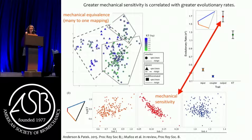That raises the question: if you have a mechanical system very sensitive to one component, should this be associated with a decrease in evolutionary rate of change? To our surprise, there's an increase in rate of evolutionary change with mechanical sensitivity. Teeny-tiny tweaks actually have huge effects on the overall system, and that actually enhances evolutionary rates of change.